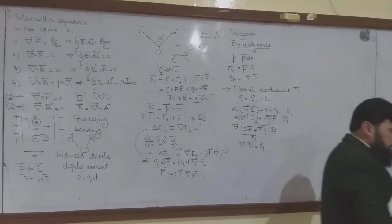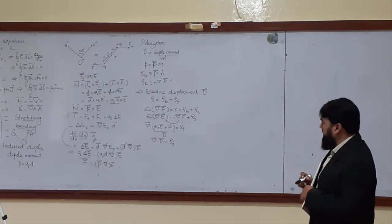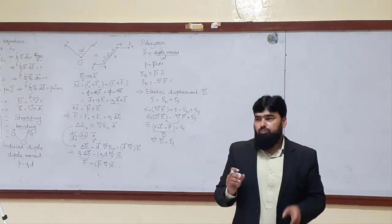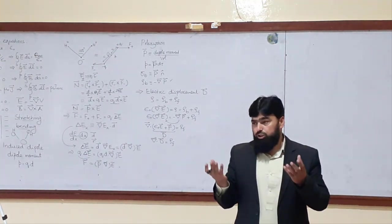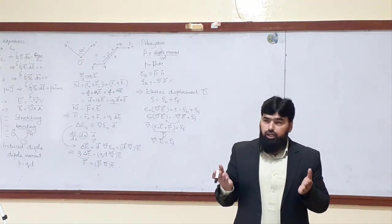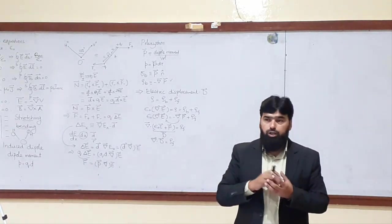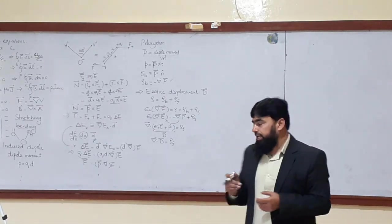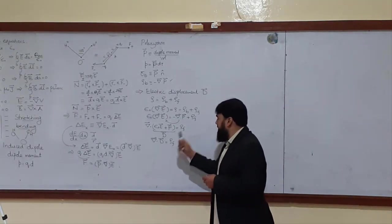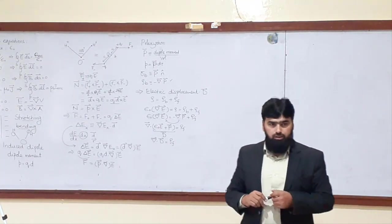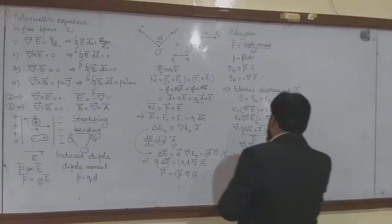Notice that in the original Gauss's law, the electric field E was diverging and that equaled the total charge — both bound and free. Here, D deals only with the free charges. So divergence of D equals rho_f. We will now see what D is more carefully.